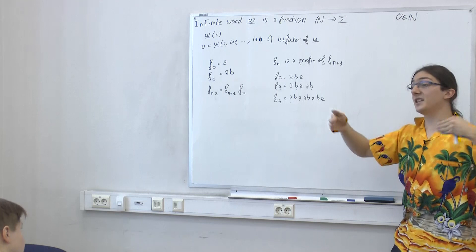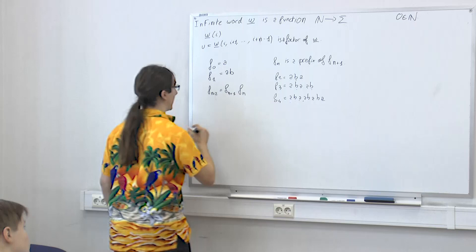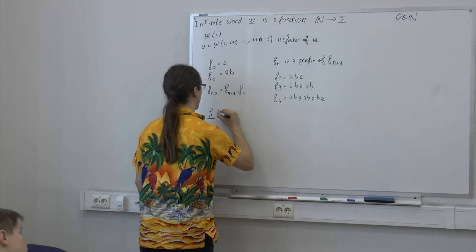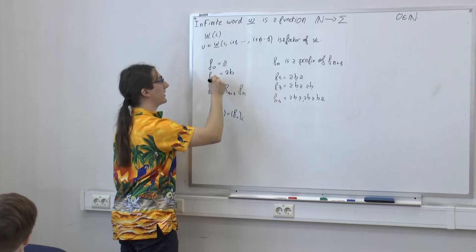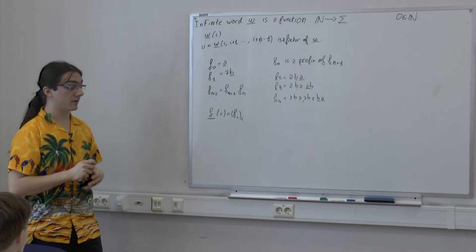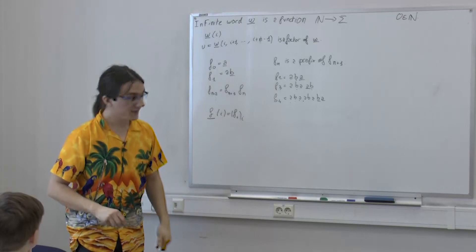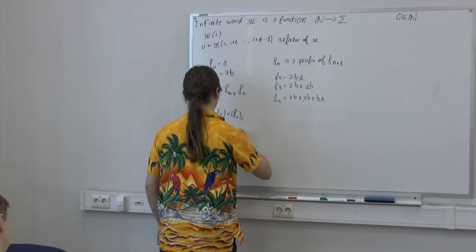To get the letters of this infinite word, you can define the infinite version f-underline, where f-underline(i) equals the i-th letter of f_i. For the letter 0 you take f_0, for letter 1 you take f_1, and so on. Like this it converges, and you have all kinds of words that you can define by recurrence. Can you guess this word's name? Fibonacci! This is called the Fibonacci word — an extremely classical example.